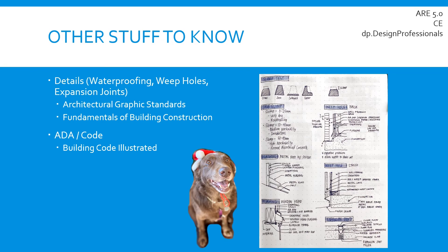These notes are things I found on the ARE community when I was studying for this exam. A lot of people recommended studying details, ADA, and code information. I went through and looked at standard details that could be easily tested on, which happened to be waterproofing details, weep holes, and expansion joints. I recommend looking in the Architectural Graphic Standards book or the Fundamentals of Building Construction — those two textbooks have really great details. If you don't have those books, you'll probably need them for later exams like PDD and PPD anyway.